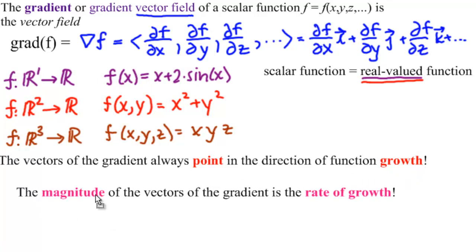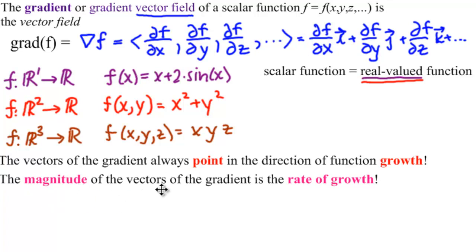Also, the magnitude of the vectors of the gradient is the rate of growth. So you look at the vector, see where it's pointing, you know in which direction it's growing. You look at the magnitude of that vector, and you will know the rate of growth.